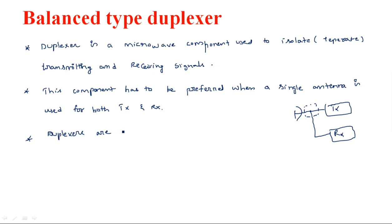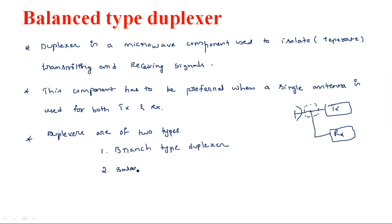Duplexers are of two types: the first one is the branch type duplexer, and the second one is the balanced type duplexer. In the previous video I explained about the branch type duplexer; now in this video I will explain about the balanced type duplexer.